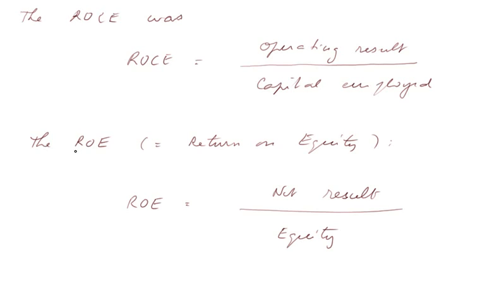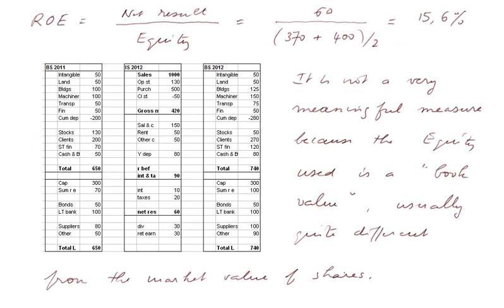Another profitability ratio is the return on equity, defined as the net result divided by equity. And whenever I write such value from the balance sheet on the denominator, I mean the average value over the year, usually the beginning value plus the end value divided by 2. So the ROE is the net result on equity.